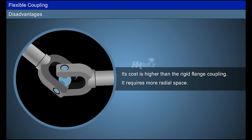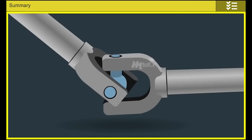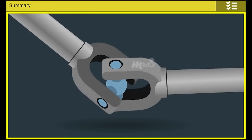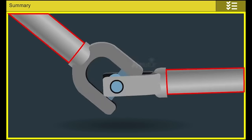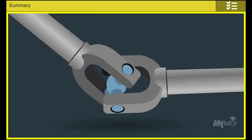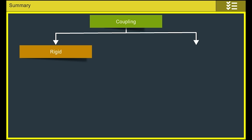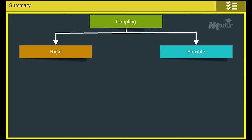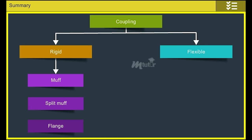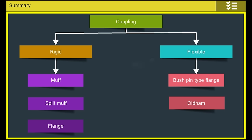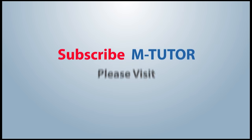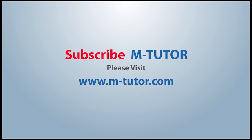In this lesson, the learner has learnt that coupling is a mechanical device which connects two shafts together at their ends for power transmission. Couplings are classified as rigid coupling for coaxial shafts and flexible coupling for non-coaxial shafts. The rigid couplings are muff or sleeve coupling, compression or clamp split muff coupling, and flange coupling. The flexible couplings are bush pin type flange coupling, Oldham coupling, and universal coupling.